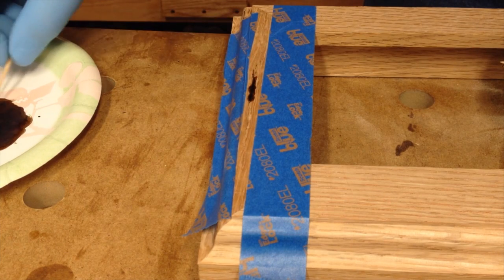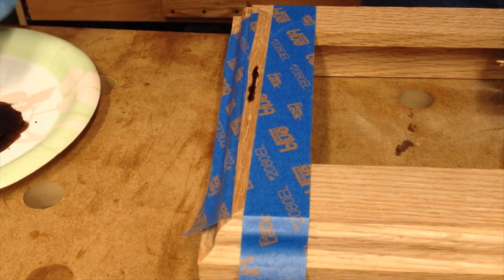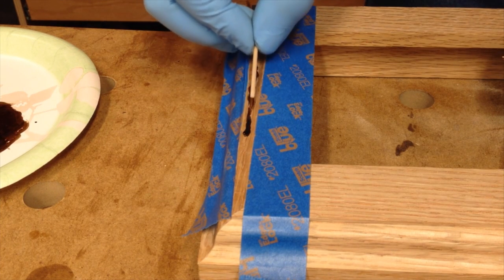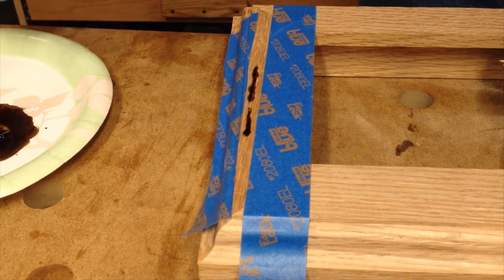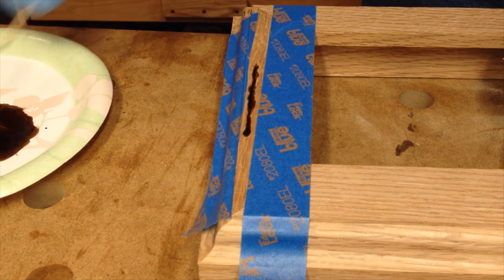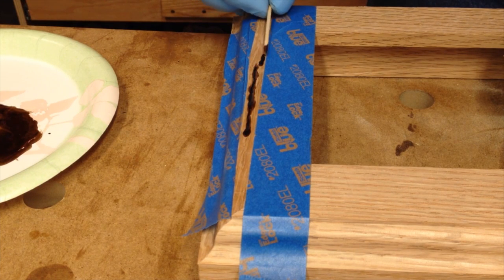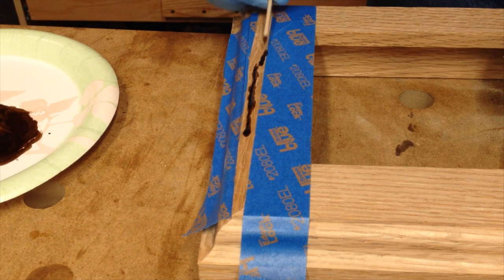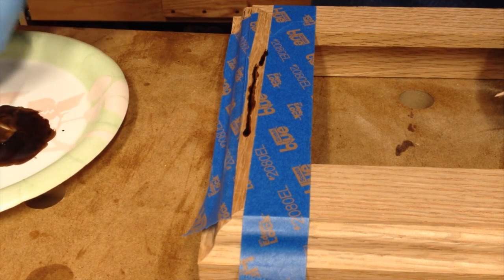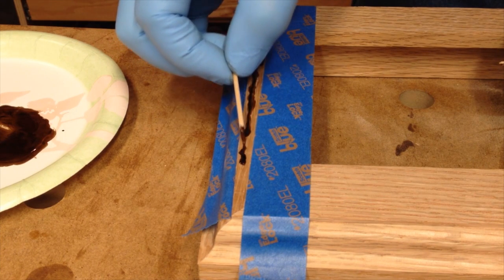It will take probably three coats of stain to even get close to how dark this is. By that time I might as well have painted it black because you won't see much in the way of wood grain. My choices are leave the defect showing or have a big dark streak of epoxy. This is a good lesson in how to do things correctly.